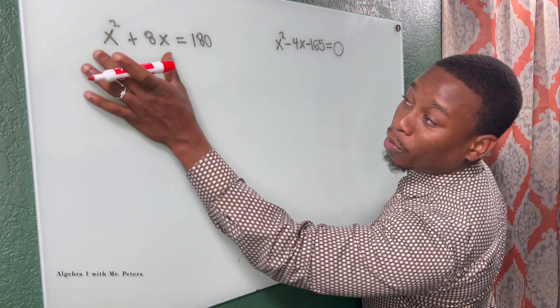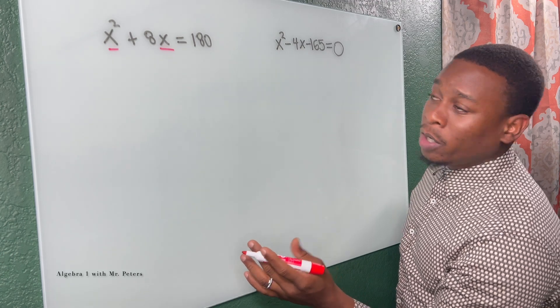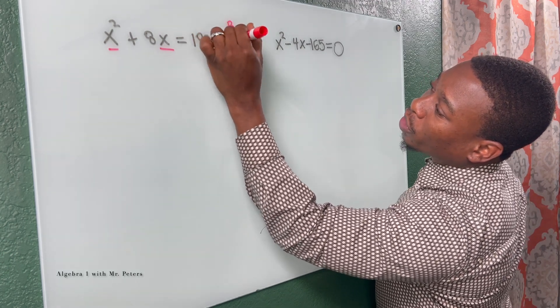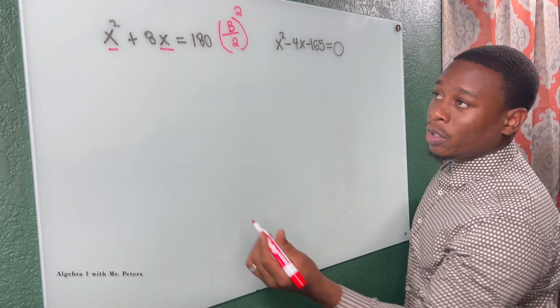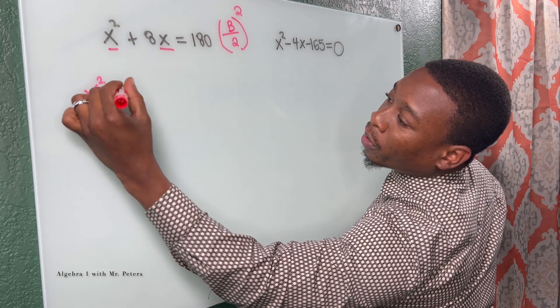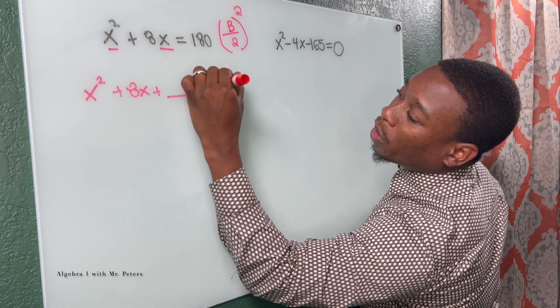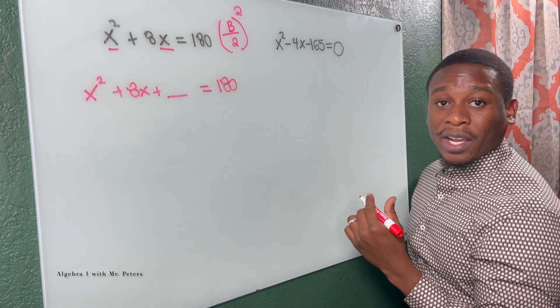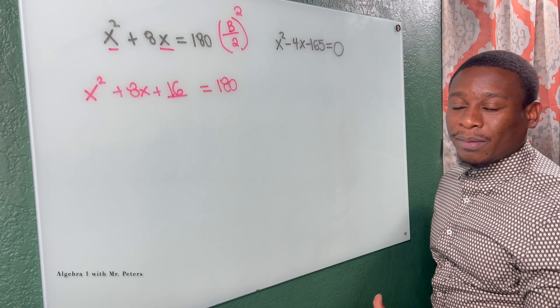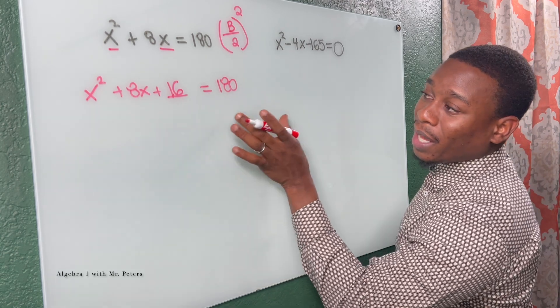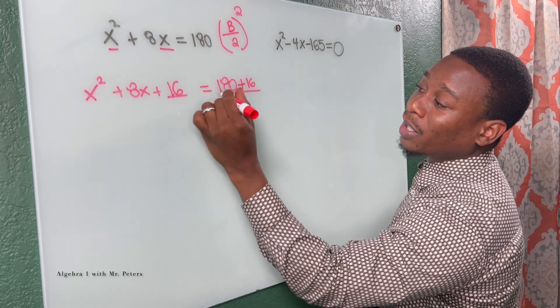So when we look at this first example, we have the A term, B term, but we're missing that constant term. To complete the square, we're gonna take half of B and then square it. So we have X squared plus 8X plus some C term is equal to 180. Half of eight is four, four squared is 16. It's an equation, meaning what I do on one side, I need to balance it out by doing it on the other side. So you see me adding 16 on both sides.